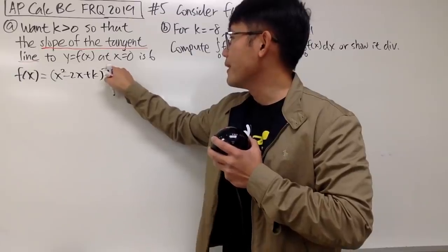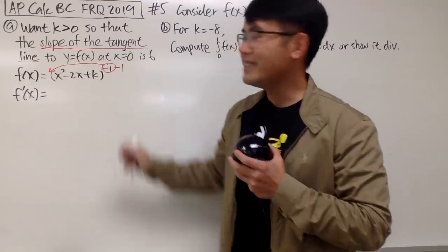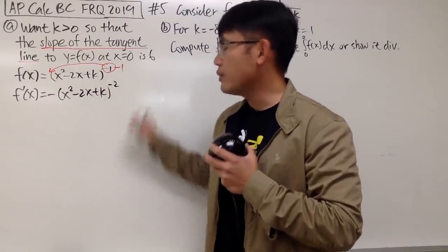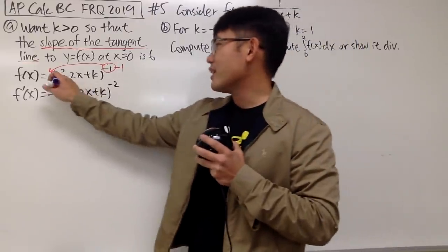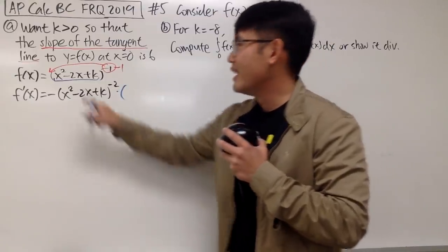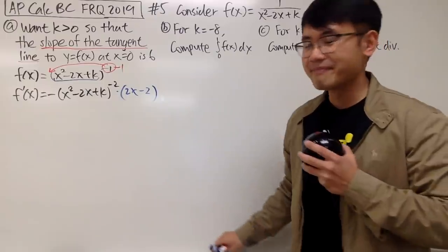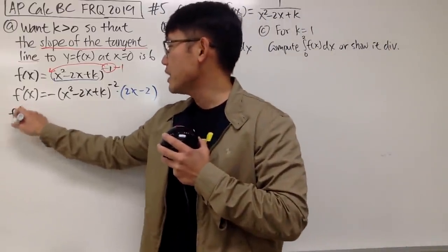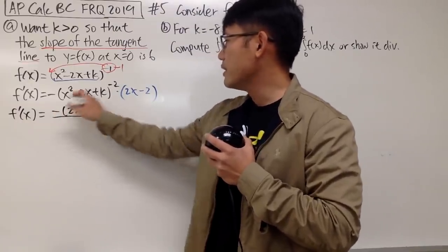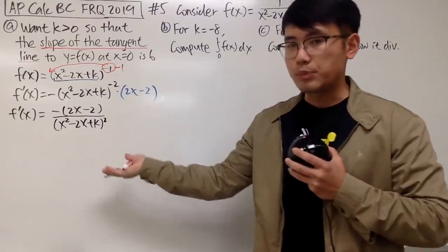We have the expression to the negative 1 power. To differentiate, let's write f'(x): take the power to the front and then minus 1, inside stays the same for now. So we have negative (x squared minus 2x plus k) to the negative 2, and don't forget your Chain Rule — if you forget about the Chain Rule on AP tests, game over. The derivative of the inside gives us 2x minus 2, and the derivative of k, because k is a constant, gives us nothing.